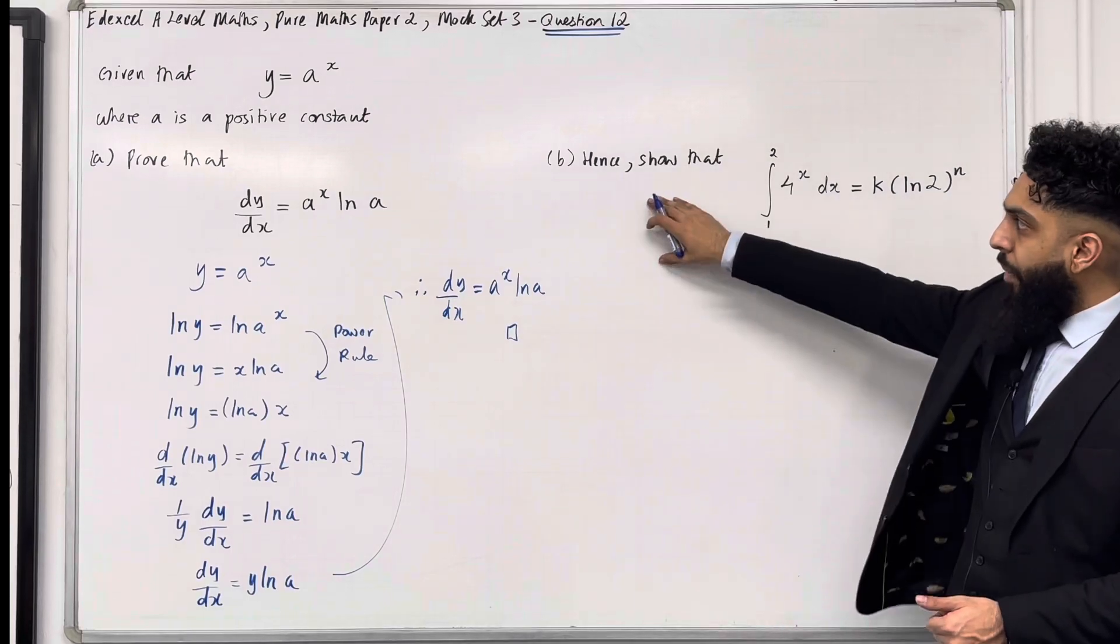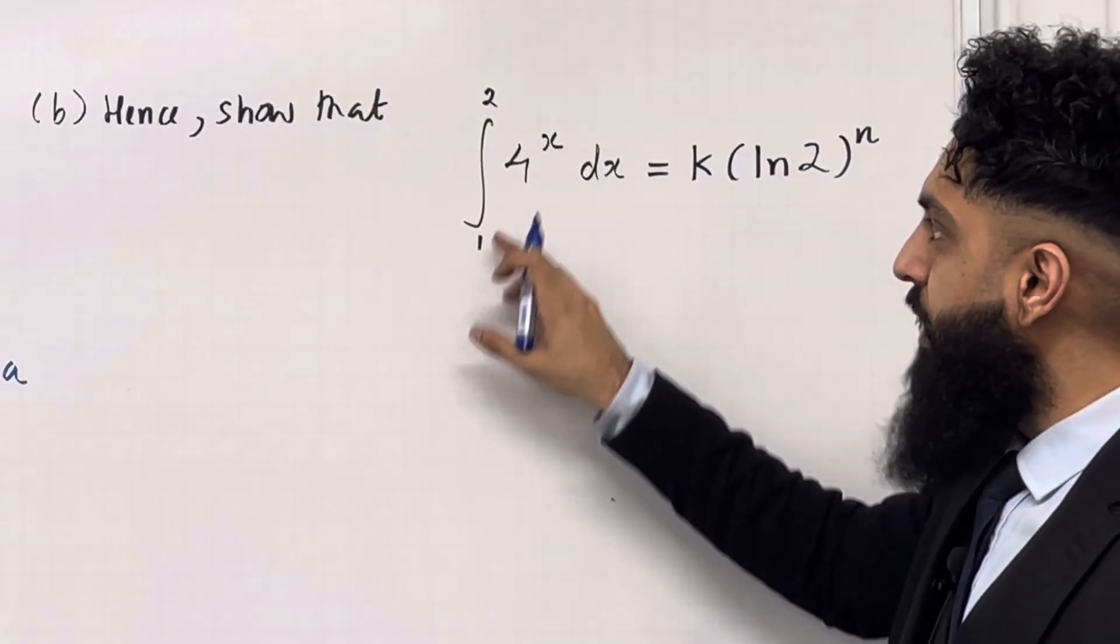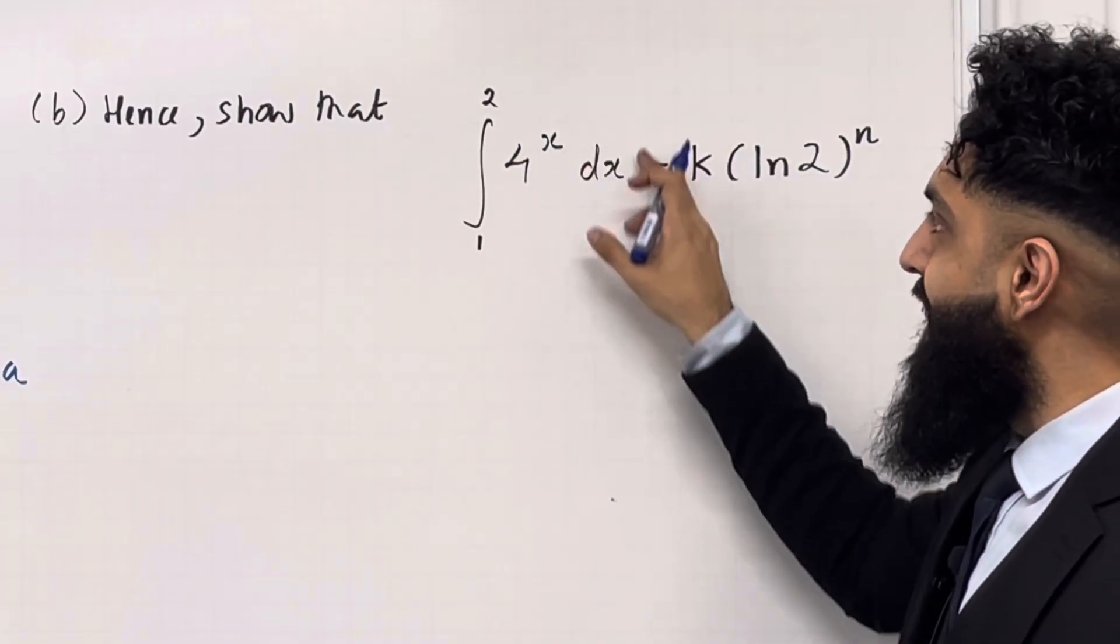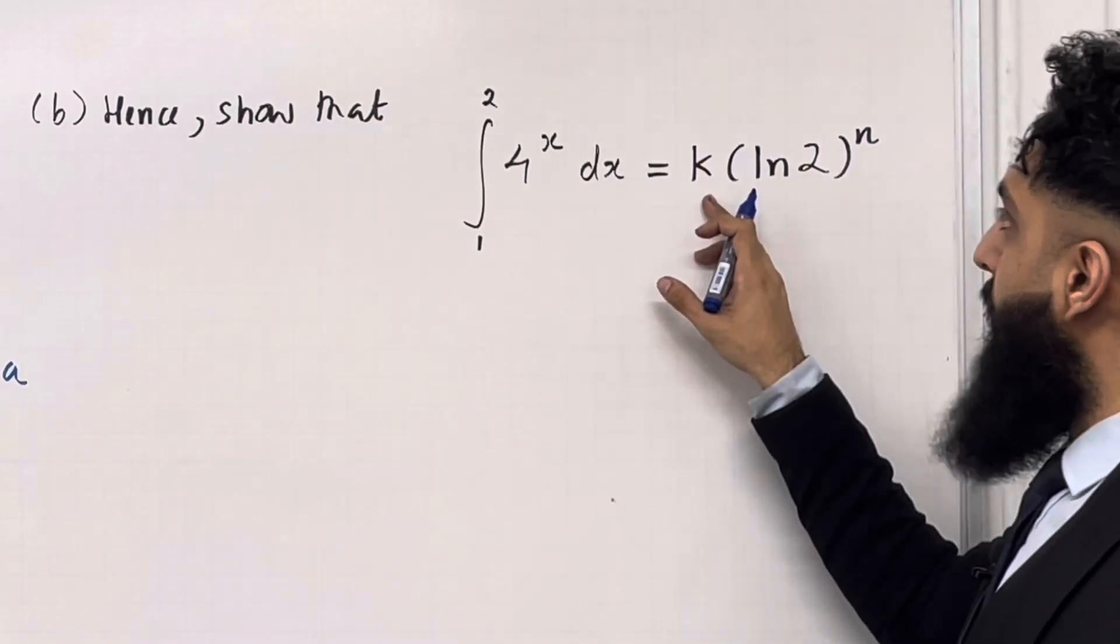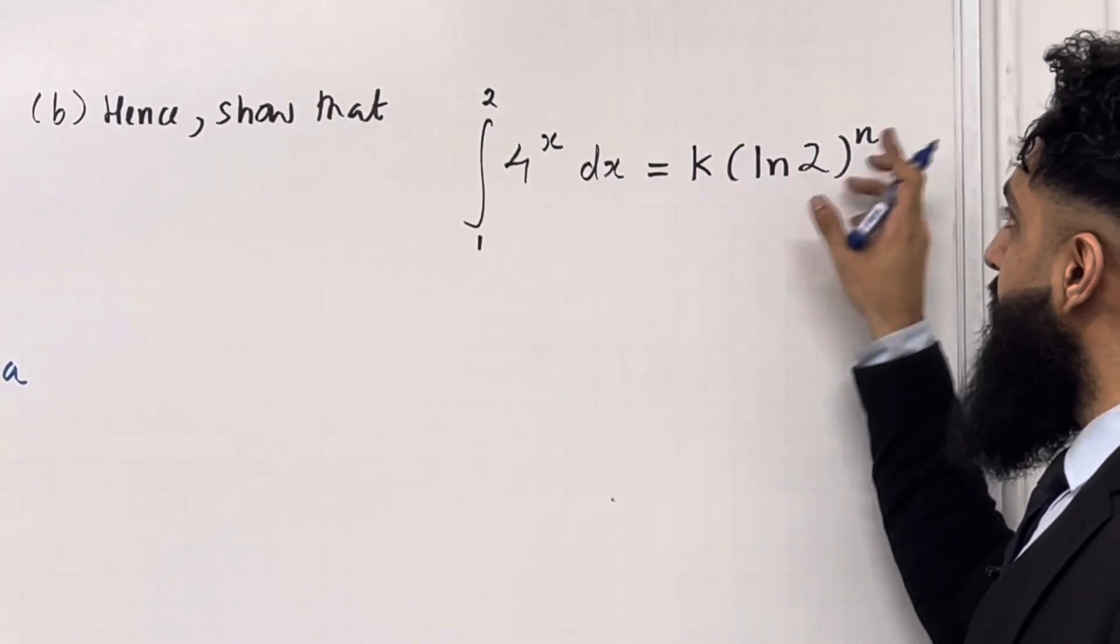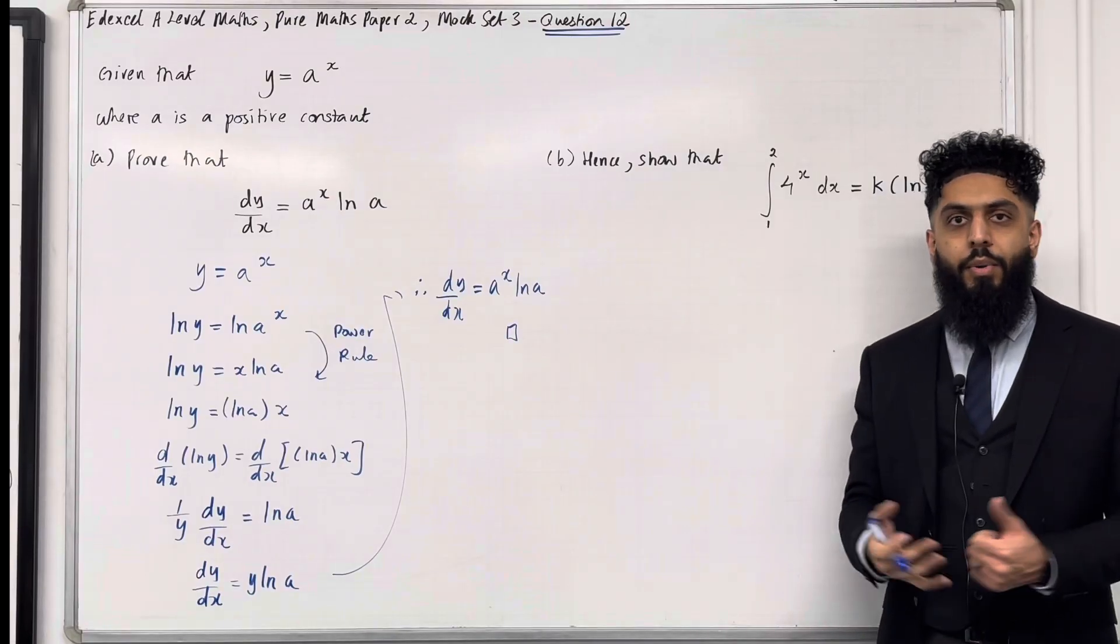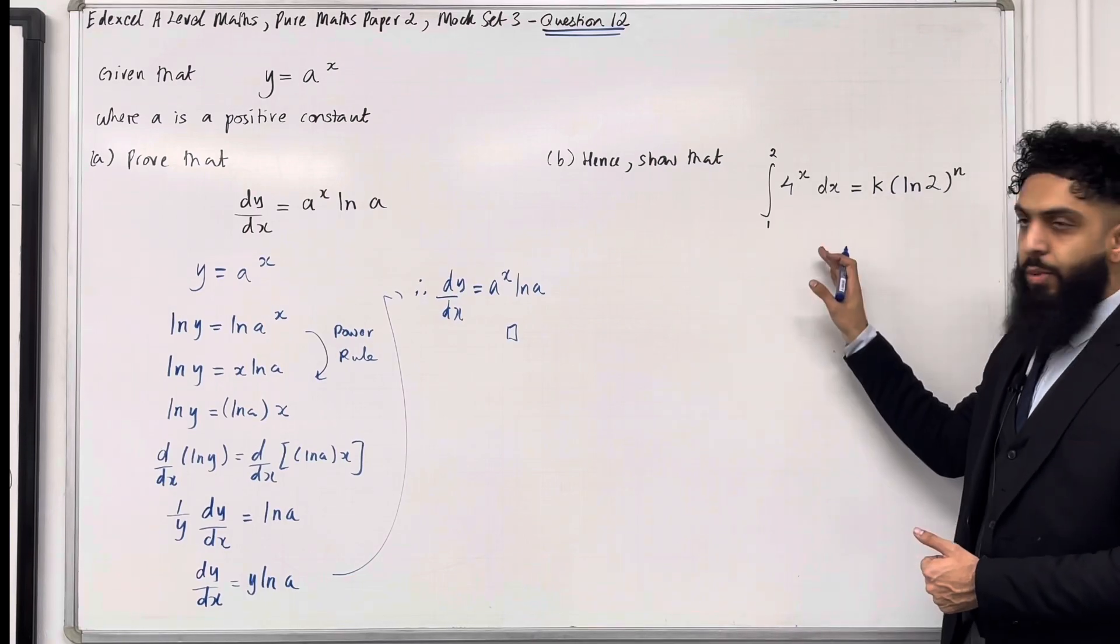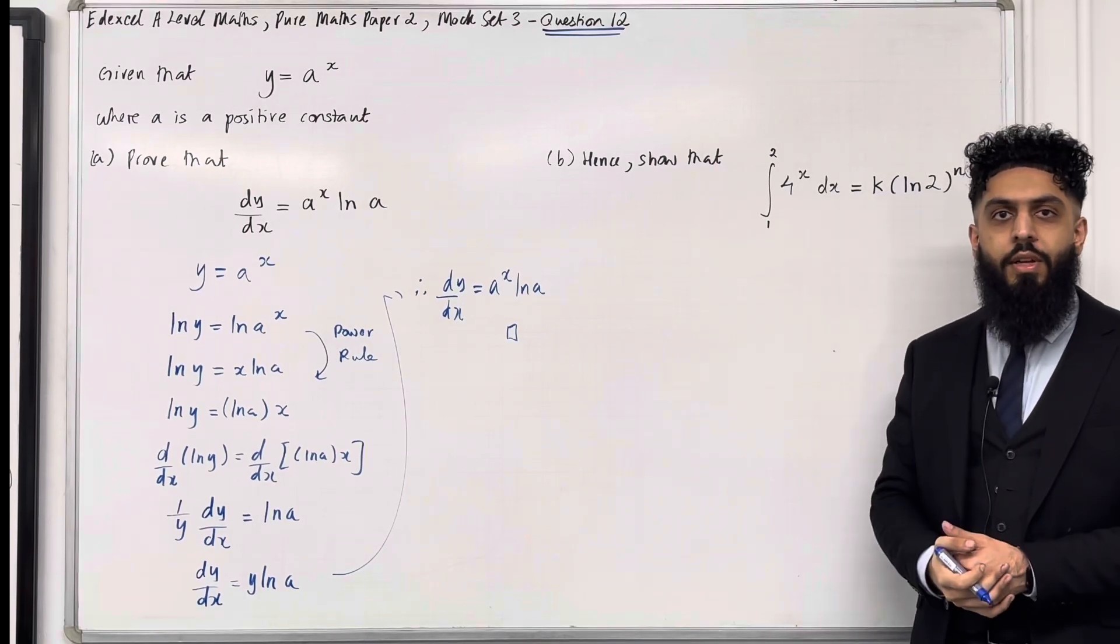So in part b, it says hence, show that the integral from 1 to 2 of 4 to the power x dx is equal k multiplied by ln 2 in bracket to the power n. Pause the video. Have a go at this question. Once you've got your complete solution, then play the video.